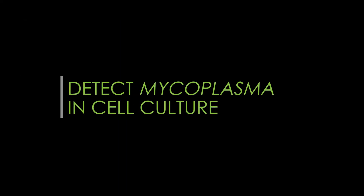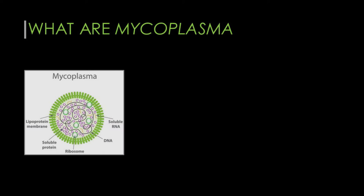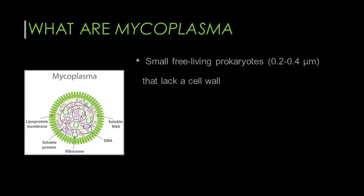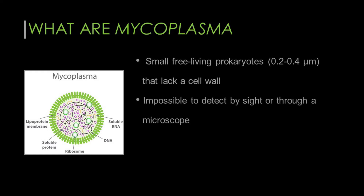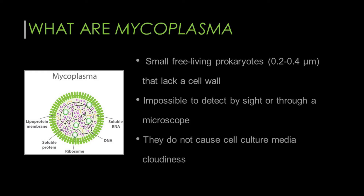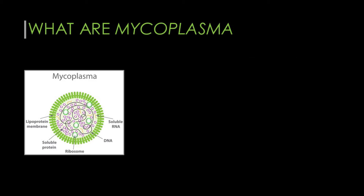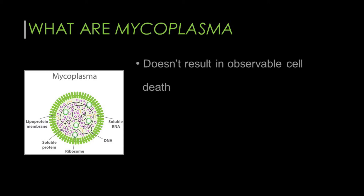Mycoplasma is a group of bacteria that commonly contaminates cell cultures, such as human cells and other mammalian cells. They are very small, free-living prokaryotes that lack a cell wall, making it impossible to detect them with the naked eye or even through a microscope. In addition, they do not cause cloudiness, which often accompanies other types of cell culture contamination. Most importantly, mycoplasma infection generally does not result in observable cell death. Consequently, they can proliferate and go undetected in cell culture dishes for a very long period of time, becoming a major obstacle to performing reliable and accurate in vitro experiments.